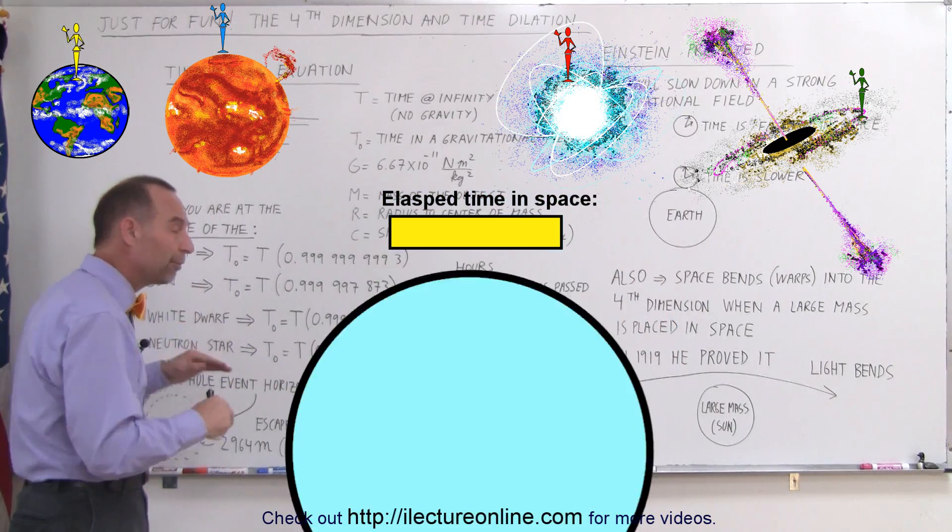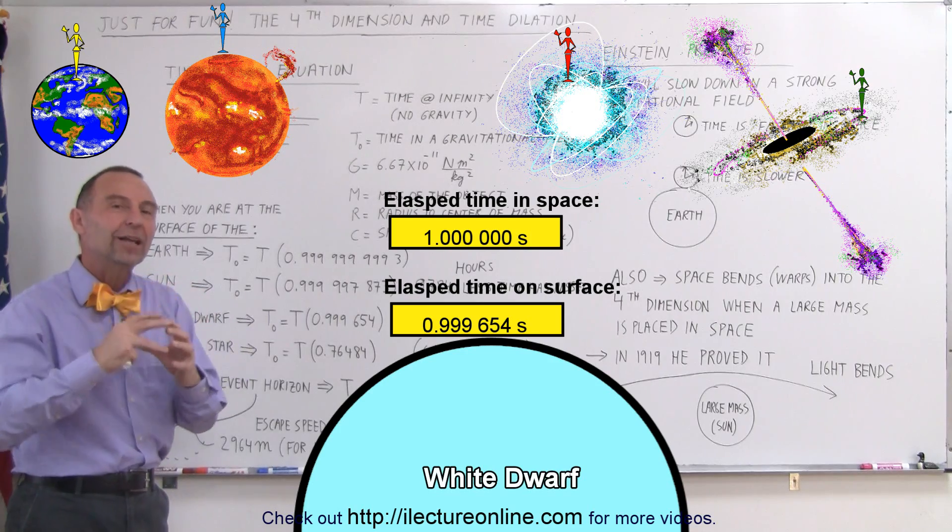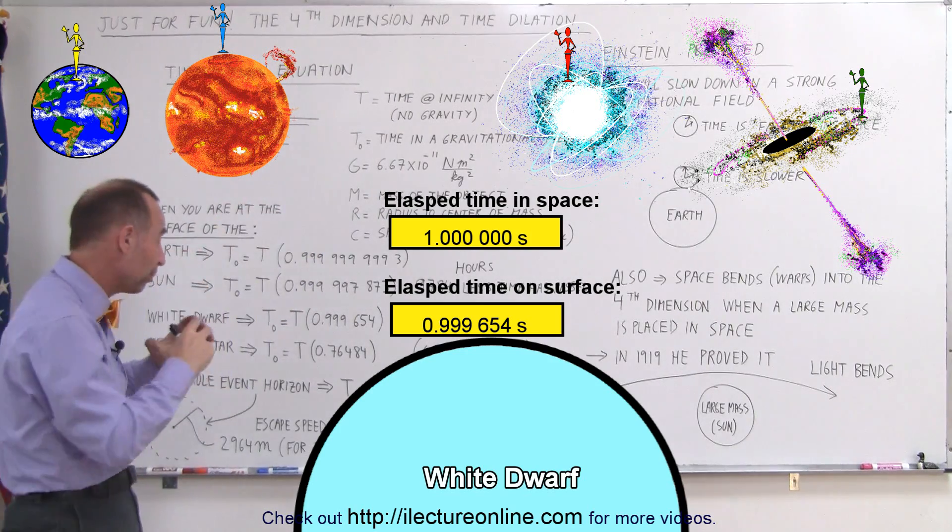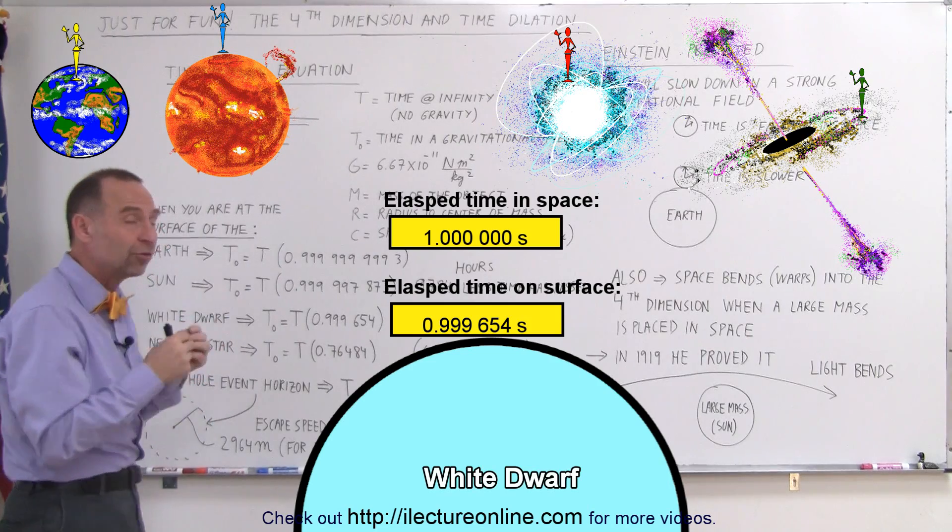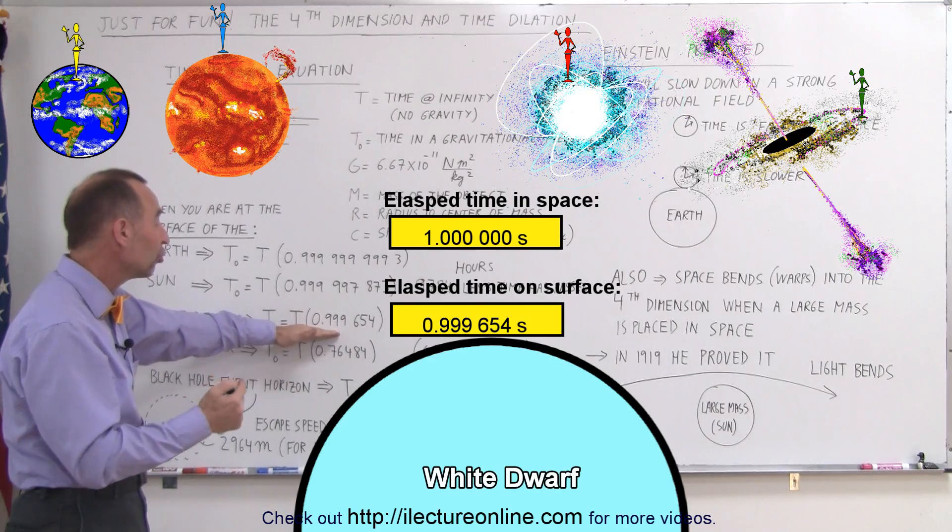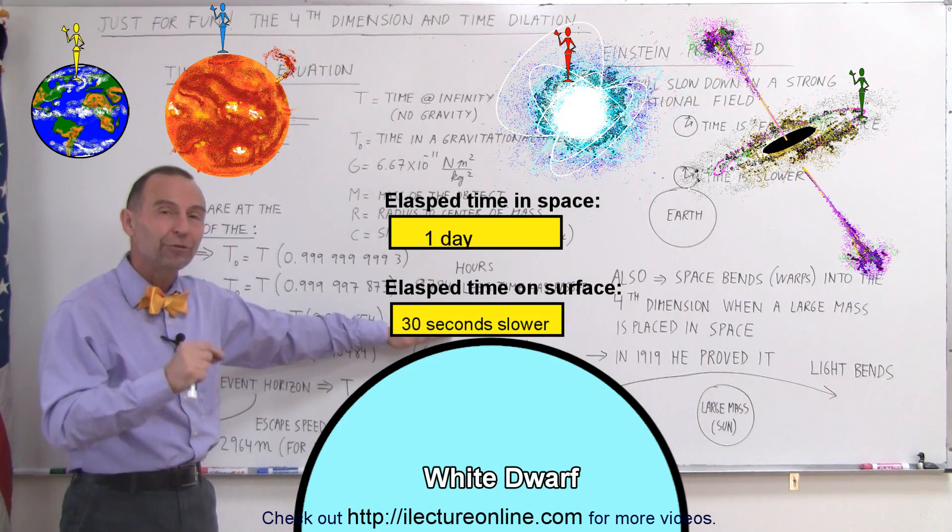When we go to a White Dwarf, on the surface of the White Dwarf, a White Dwarf is the remnant of a dying star where the massive core of a star is collapsed into a volume no bigger than the Earth, the gravitational forces are so enormous on the surface of a White Dwarf that time will slow down significantly. It will slow down a half a minute for every day.